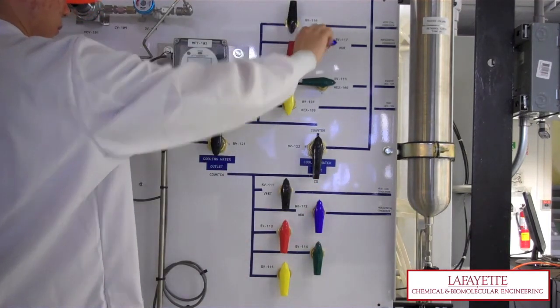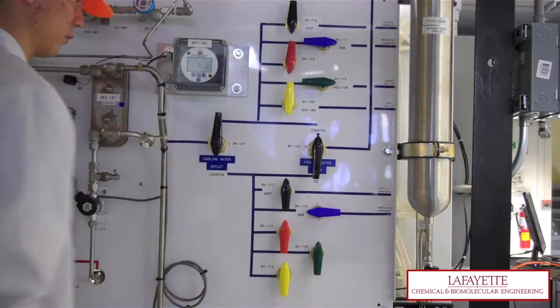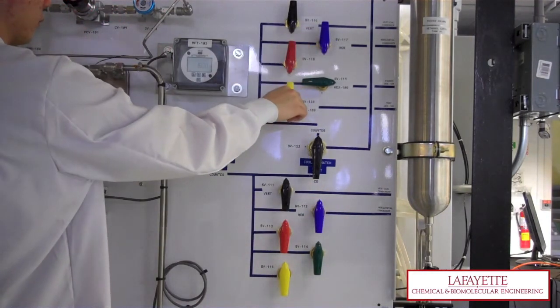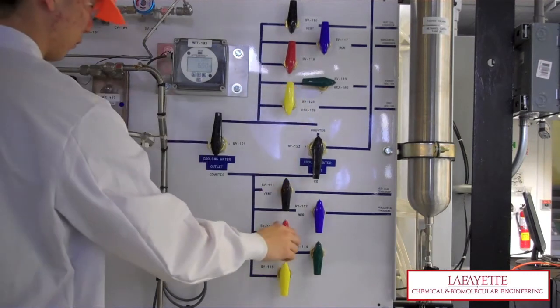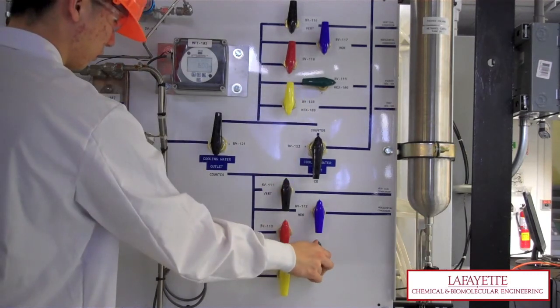Open BV117 and BV112 to utilize the horizontal condenser. Ensure that BV118, 120, 113, 114, and 115 are all closed.